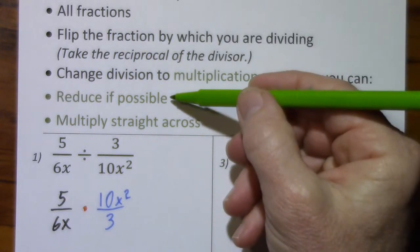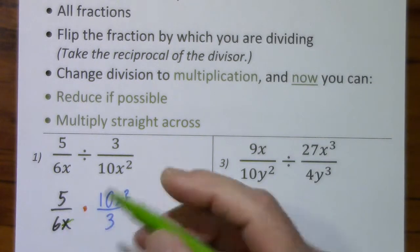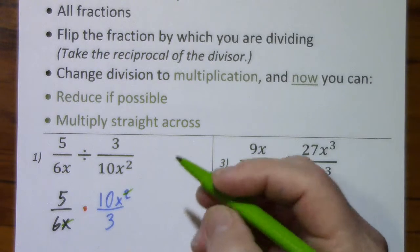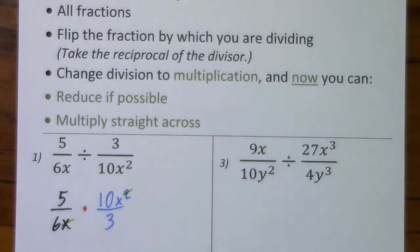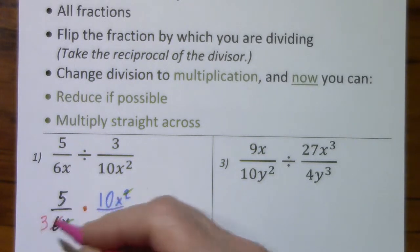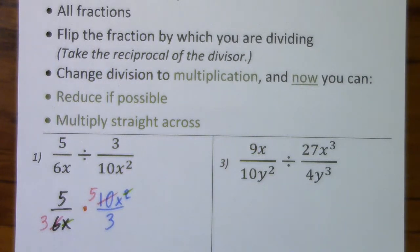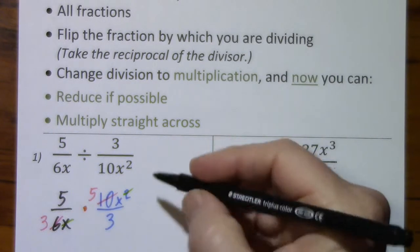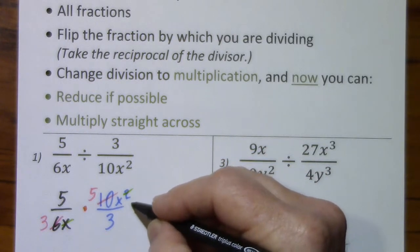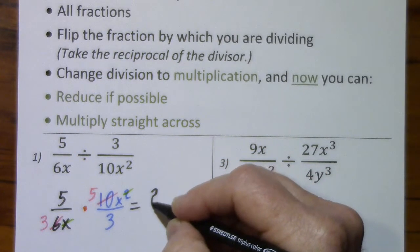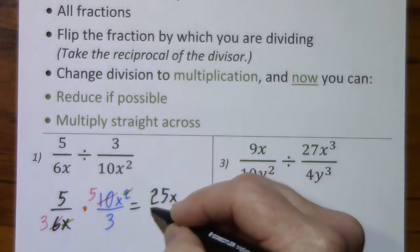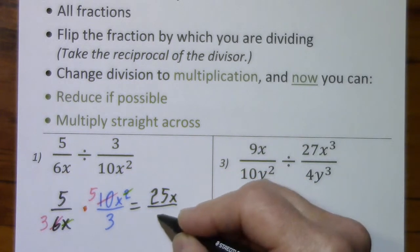We will reduce if possible, so canceling x to the first — subtract 1 from 2 — this leaves us with just x in the numerator. And then we have a common factor of 2 in 6 and 10: divide by 2, divide by 2. Now we'll multiply straight across; there's nothing else we can reduce. That gives us 25x over 9, since 3 times 3 gives us 9.